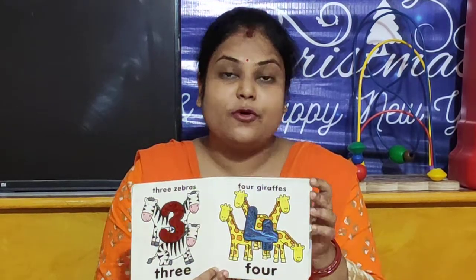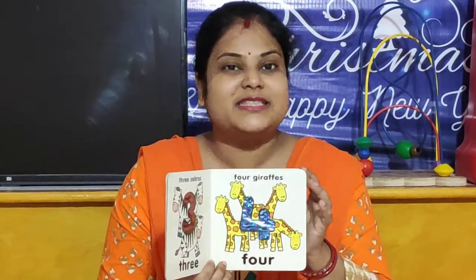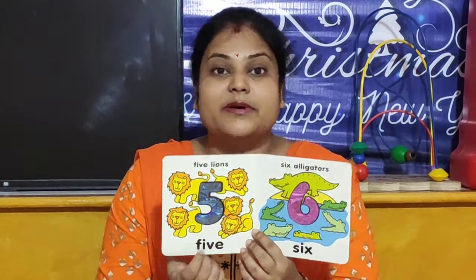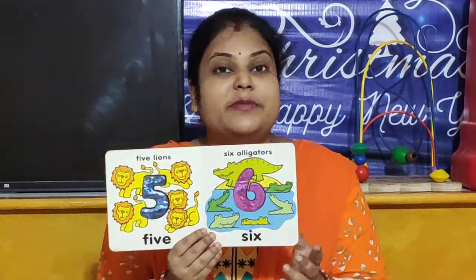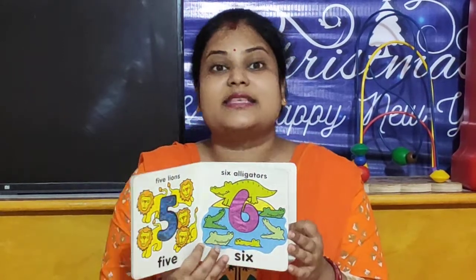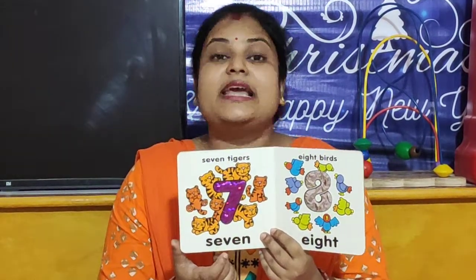And children, after 4, which number comes? Number 5 comes. So children, F-I-V-E. And after 5, number 6 comes. So tell me the spelling of 6: S-I-X. And after 6, number 7 comes. And what is the spelling of number 7? S-E-V-E-N.